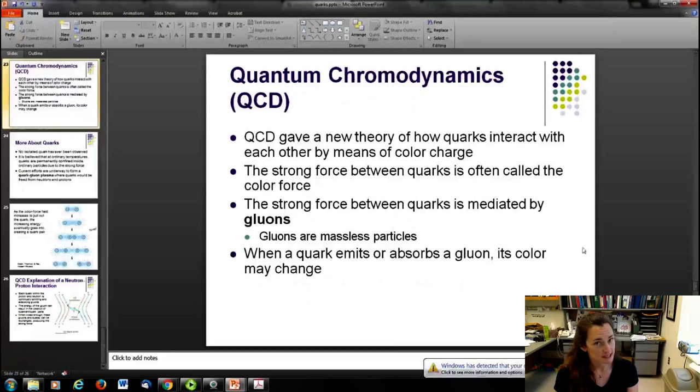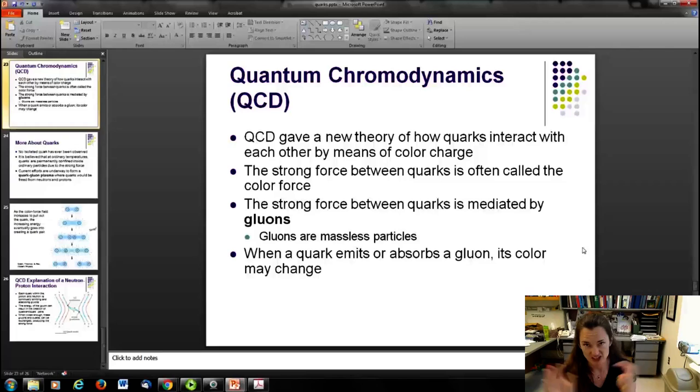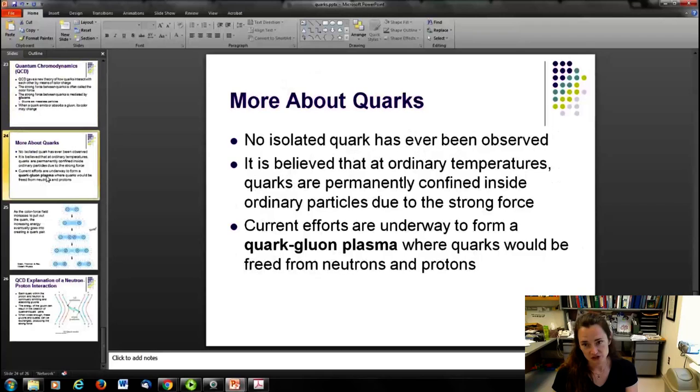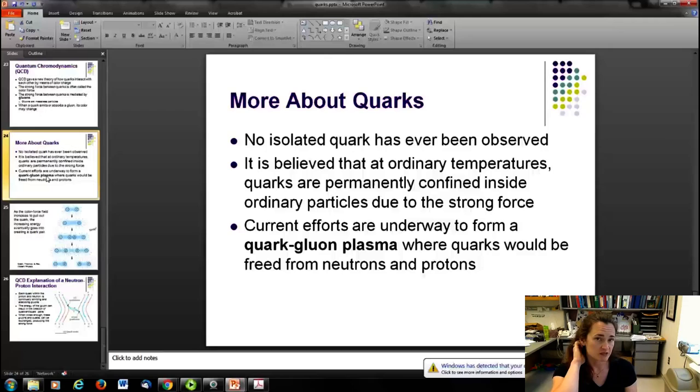There's a new field of study since the 1950s and 60s, and it's called quantum chromodynamics. Of course, chromo means color. So it's the study of how quarks interact with each other via means of the color charge and the color force. The strong force between quarks is often now called the color force, and the strong force between quarks is mediated by the mediating particle named the gluon. The gluon is a massless particle. Sometimes, if a quark emits or absorbs a gluon as it does during an exchange, you can get the color to change, which is kind of cool. We've never observed an isolated quark. It's believed that at ordinary temperatures, it's pretty much impossible to do that, that they're so strongly attracted to one another by the strong force that it's just not happening. Current efforts of study include trying to form a quark-gluon plasma where quarks would be freed from the neutrons and protons. Maybe then they could isolate one. This would mean, though, that they would need to recreate in a very small way the conditions of the very early universe before the strong force separated out. That would be some tough science.